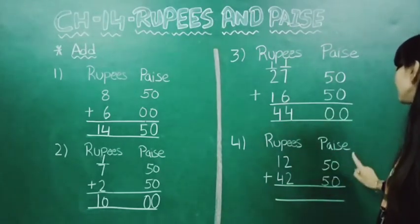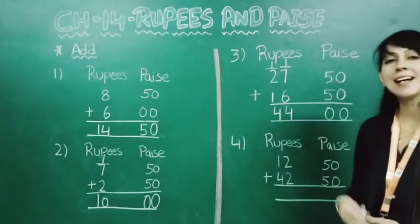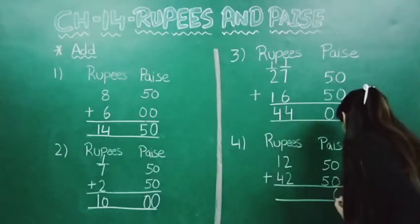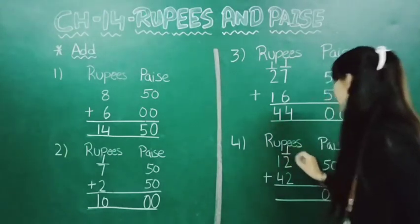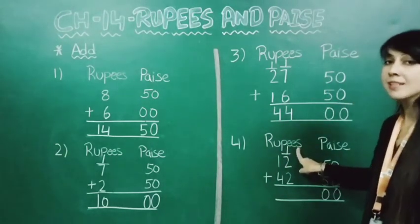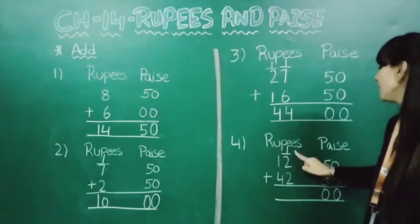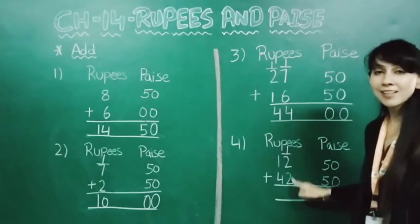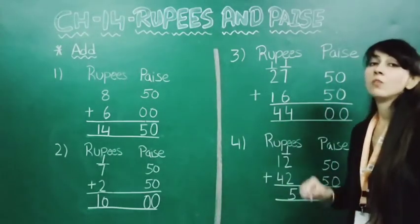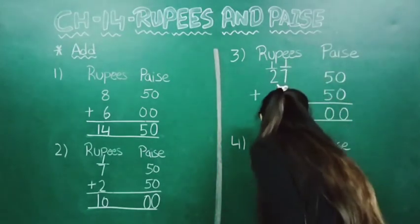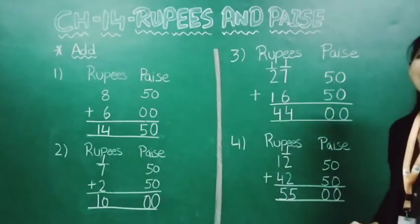Now 12 rupees 50 paise plus 42 rupees 50 paise. Here it will come 0. Now 5 plus 5 is 10, so we will just carry 1 into the rupees line, in the 1's place. Now 1 plus 2 is 3, and 3 plus 2 is 5, so here we will write 5. Now 1 plus 4 is 5. So here you can find out the answer is 55 rupees.